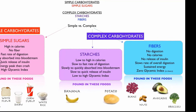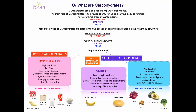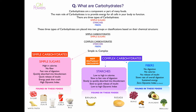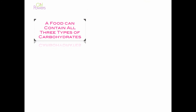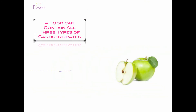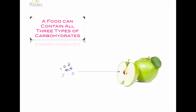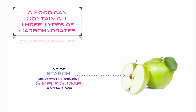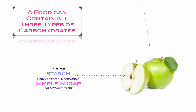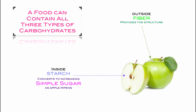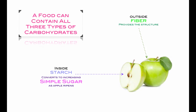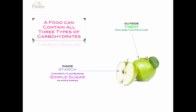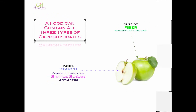So there's the whole picture. These things are not mutually exclusive — you can find all three in one place. A food can contain all three, like an apple. The inside of the apple starts as starch, but as it ripens, it converts to increasingly simple sugar — so there are two types of carbohydrates right there. And the outside of the apple is fiber, which provides structure. There is also fiber on the inside, but the key point is that all three types can exist in one item.